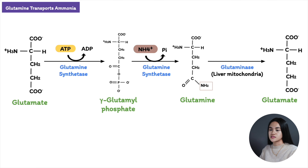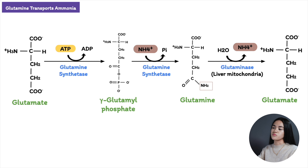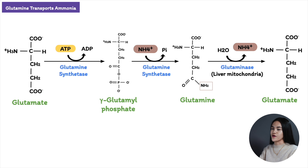Glutamine is a non-toxic transport form of ammonia. It is transported in the blood to the liver and kidneys, where the enzyme glutaminase converts glutamine to glutamate and ammonium ion. The ammonium ion in the liver is then disposed of by urea synthesis. There is also another transport mechanism — ammonia from skeletal muscles to the liver via alanine, through the glucose-alanine cycle.